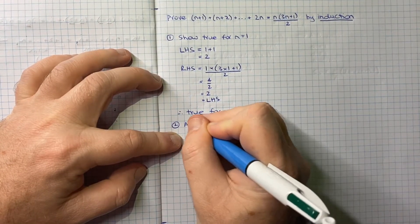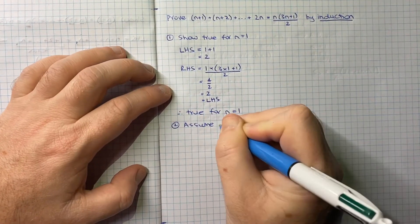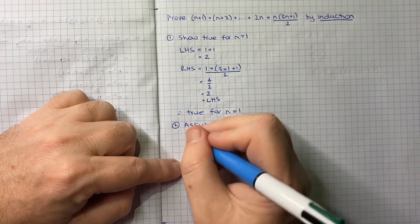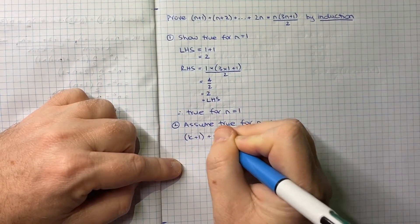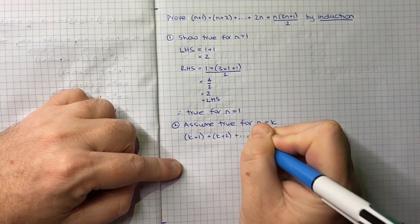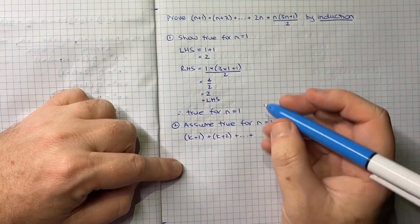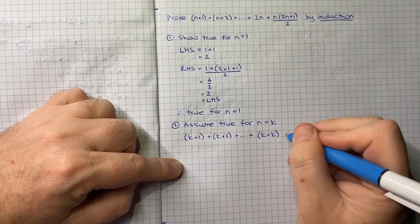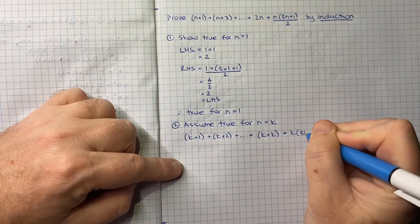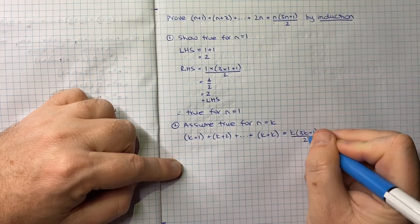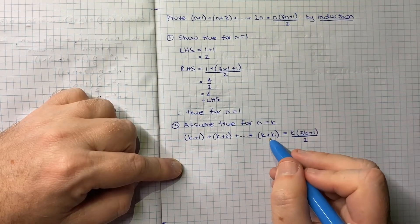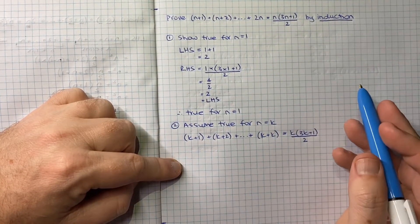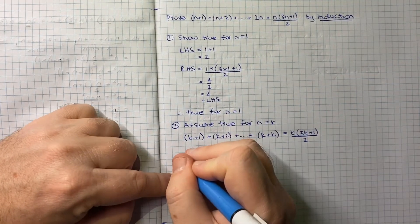Step 2 is to assume true for n=k, so we have (k+1) + (k+2) + ... + (k+k) equals k(3k+1)/2. I'm deliberately writing the upper limit as k+k rather than 2k, because you'll see in step 3 it's a little more helpful to note it that way.